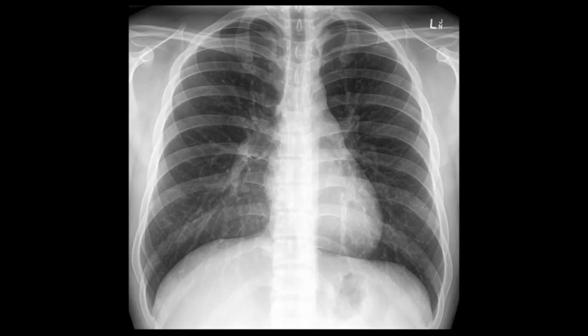Next we're going to work through the anatomy that can be seen on a normal chest film. As you can see, there's a letter L in the top corner telling you which side is left. First of all, let's look at the airways — you can see the borders of the trachea as it runs down the centre. Next we will look at the bones.